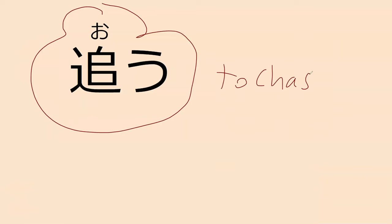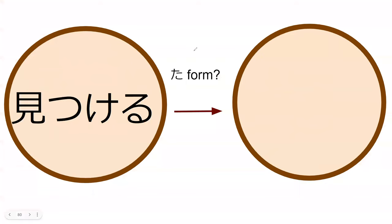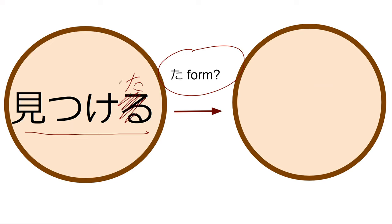Our next verb is oru, which means to chase. And this is a super common kanji in this book, so you'll be learning it soon. But first — mitsukeru — what is the ta-form of this verb? Mitsuketa. That's a good guess. It is a ru-verb, so it's just ta rather than tta. Mitsuketa. Perfect.